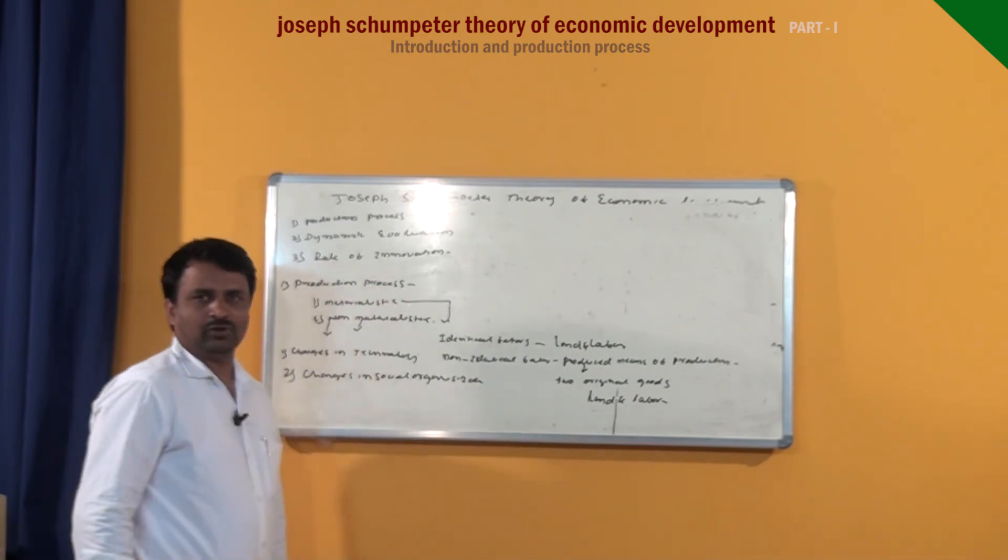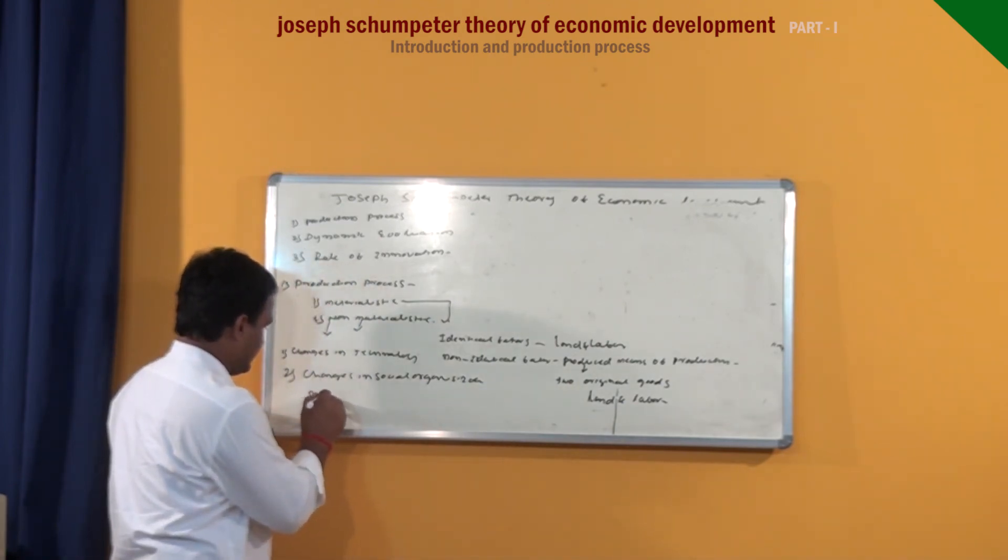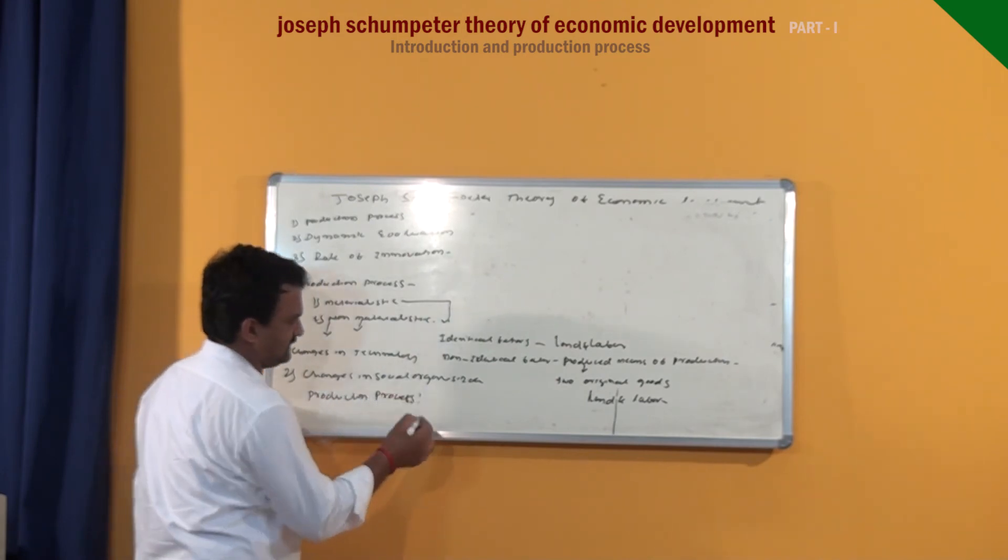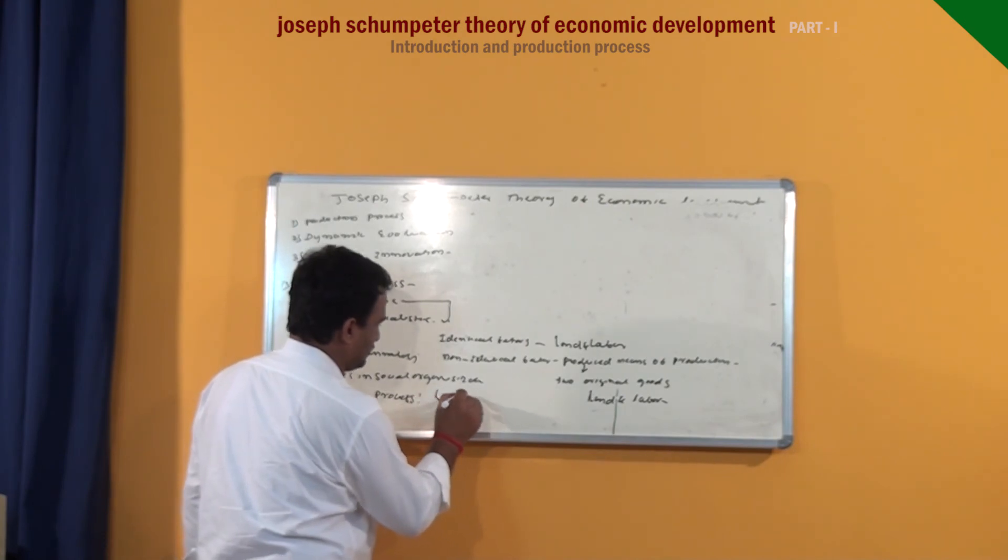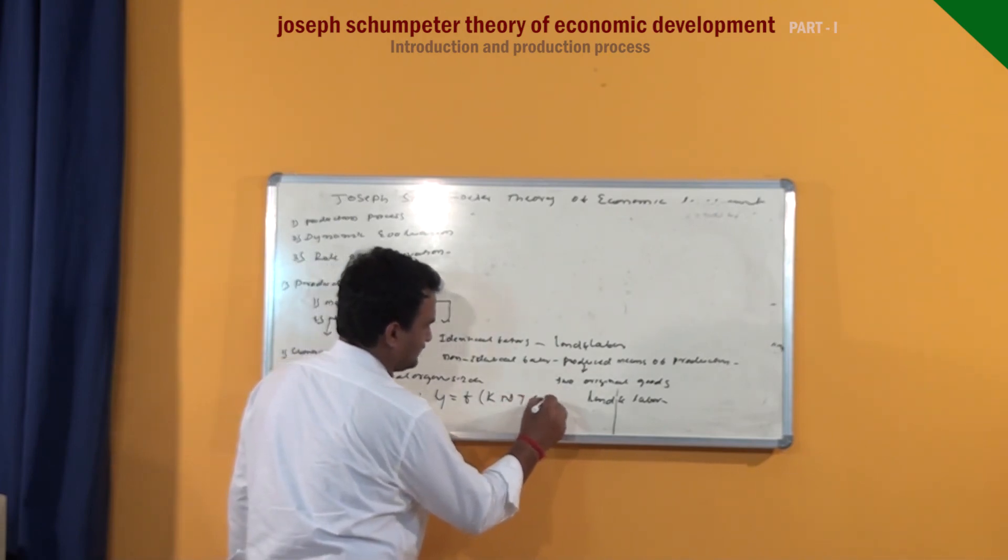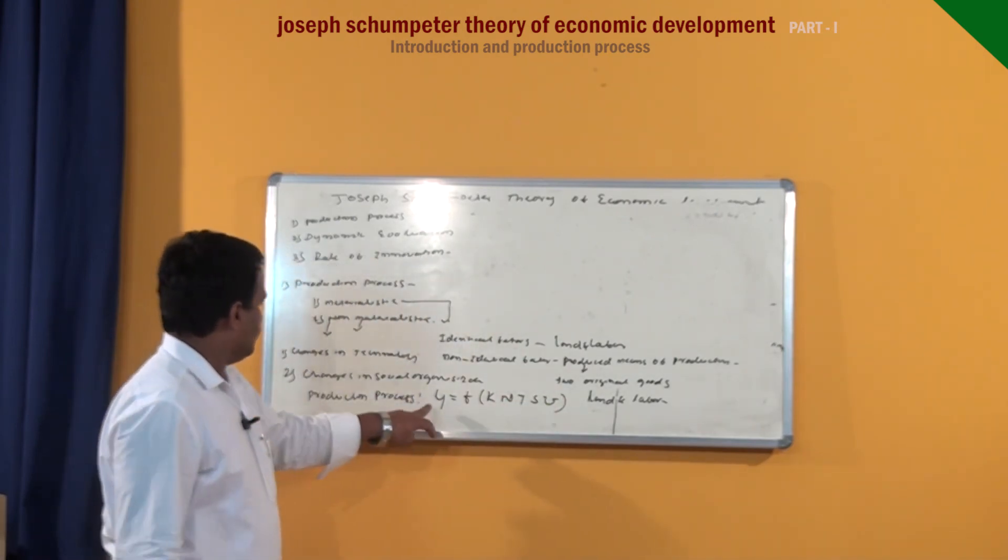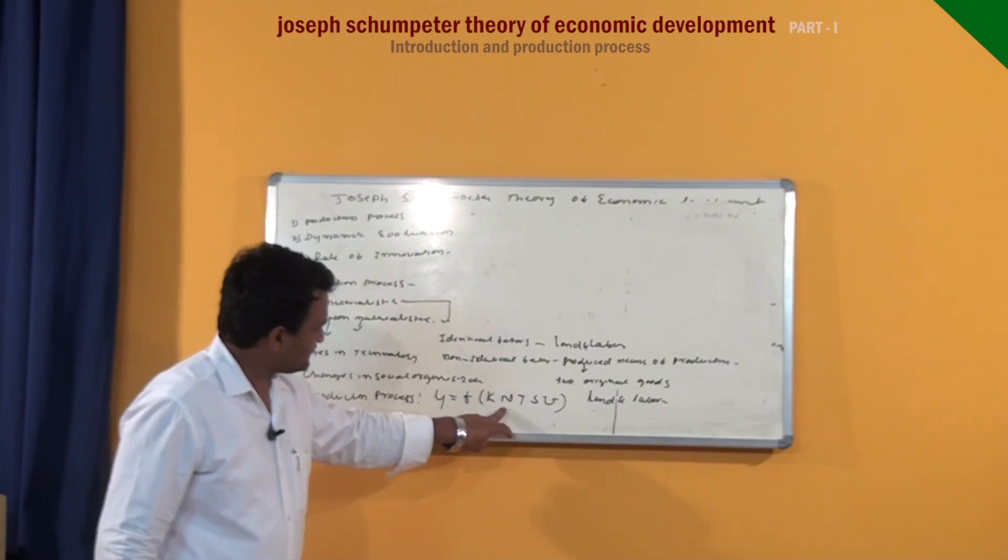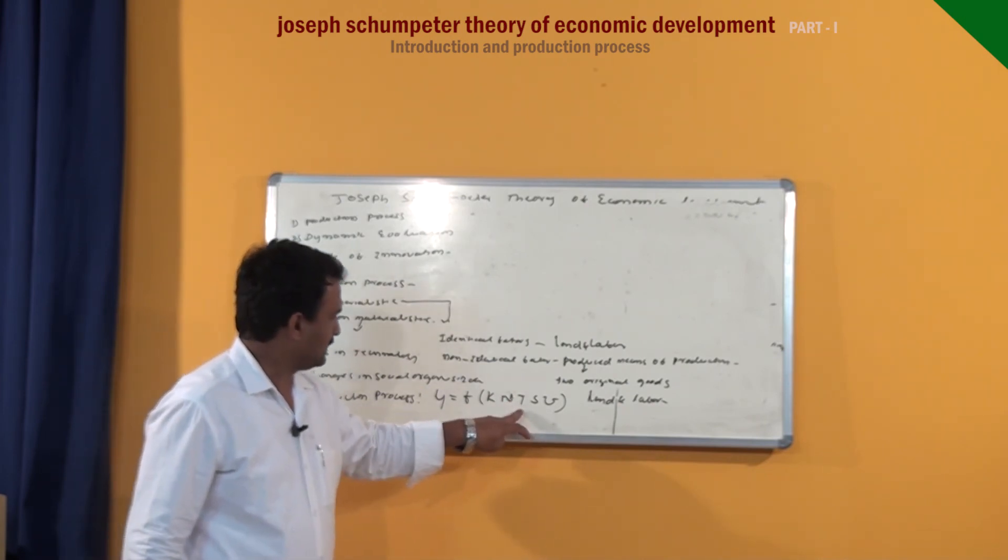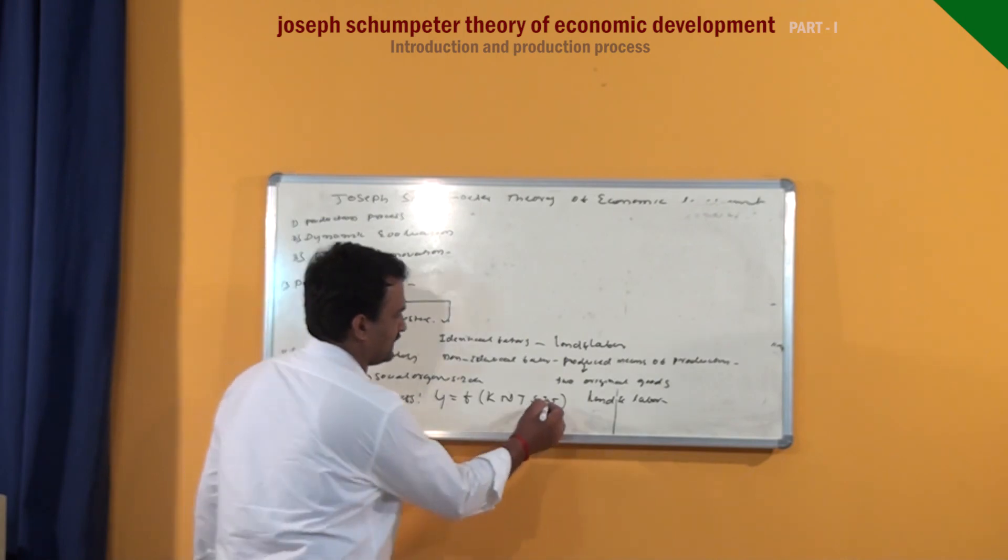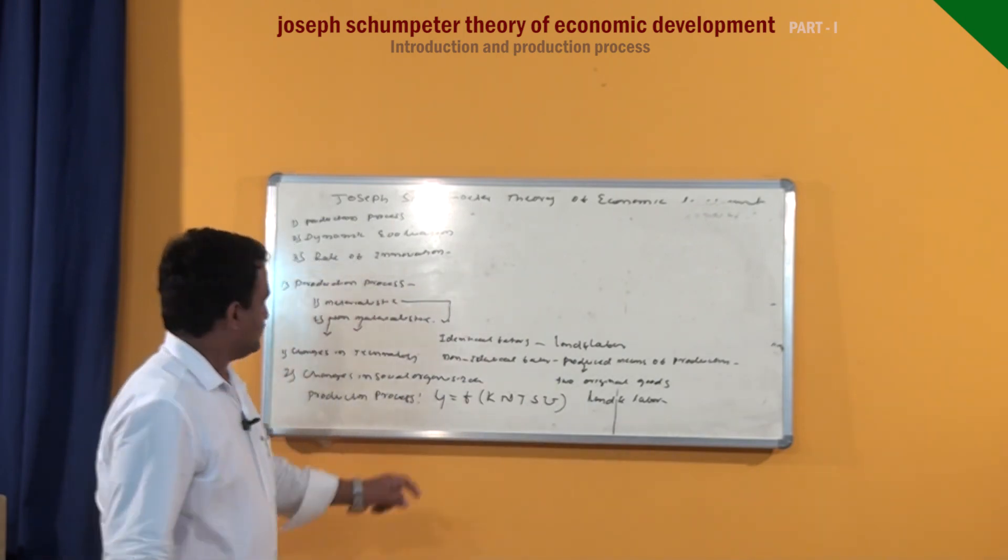According to him, production process is Y equals F of K, N, T, S, U. Y indicating output, K indicating produced means of production, N indicating constant capital, T indicating technology, S indicating saving, U indicating changes in social organization.